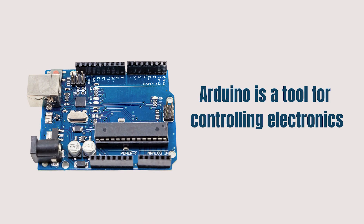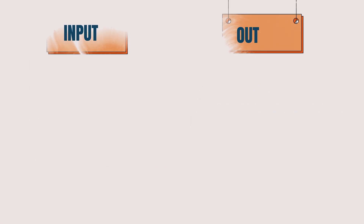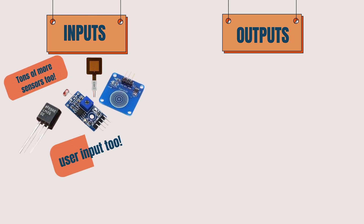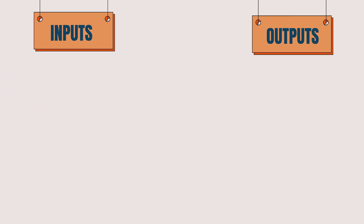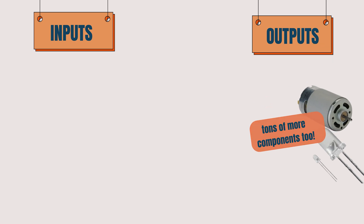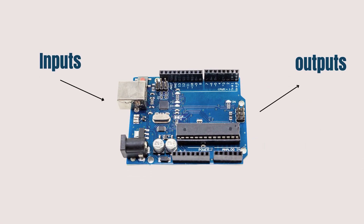But what kind of electronics are we talking about? Let's divide them into two categories: inputs and outputs. Inputs are electronic components that collect information, like temperature sensors, light sensors, touch sensors, and flex sensors. Outputs are components that perform actions, such as DC motors, stepper motors, solenoids, LCD displays, LED lights, and speakers. Arduino allows you to read input signals and control output devices, making it a powerful tool for electronics projects.